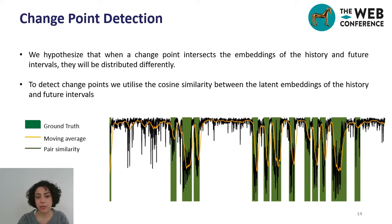The figure shows an example of cosine similarity between the predicted representation and actual representation of future frame. The green areas show the interval pairs which contain a change point and the yellow line shows the average of recent frame similarity. We can see the similarity drops at the change point areas.